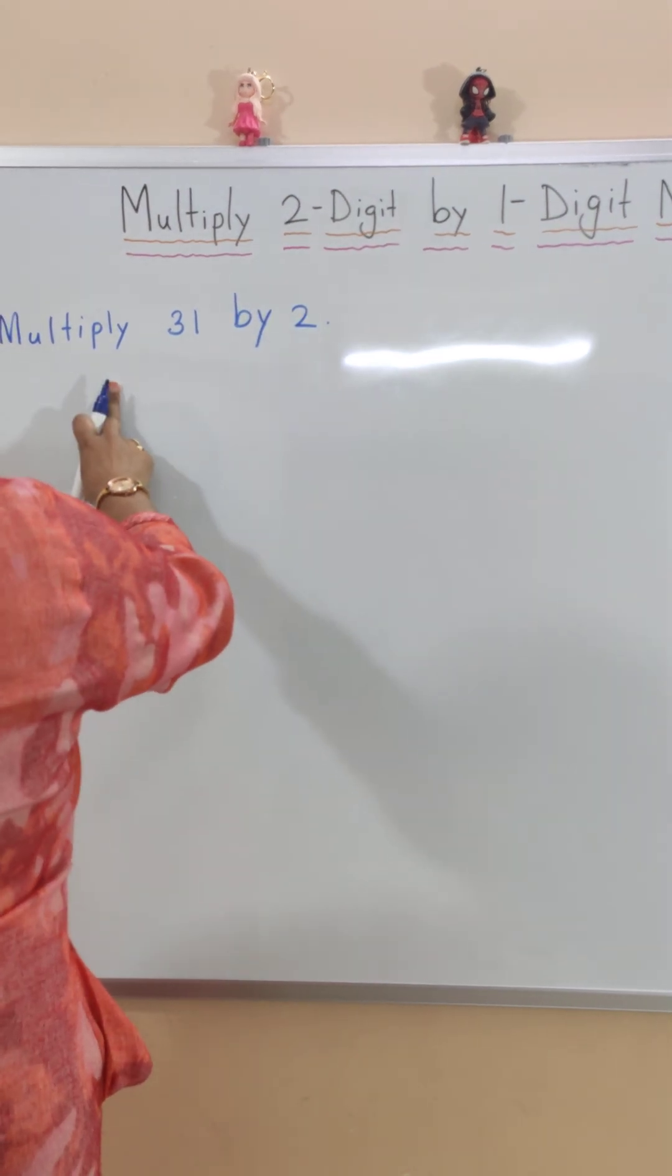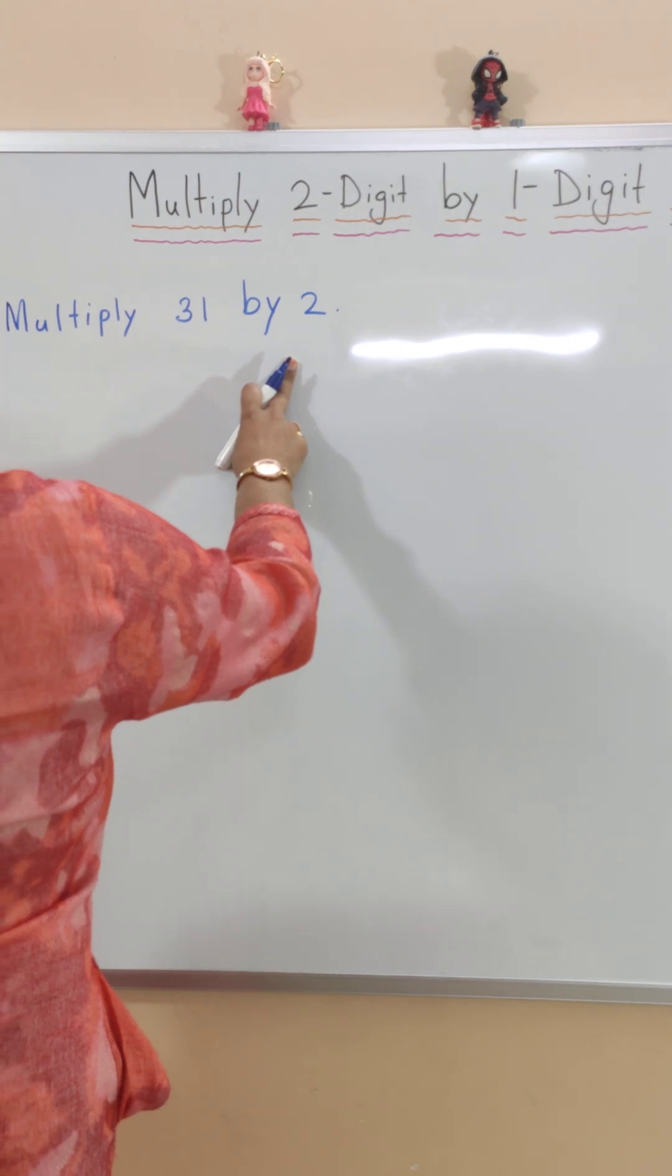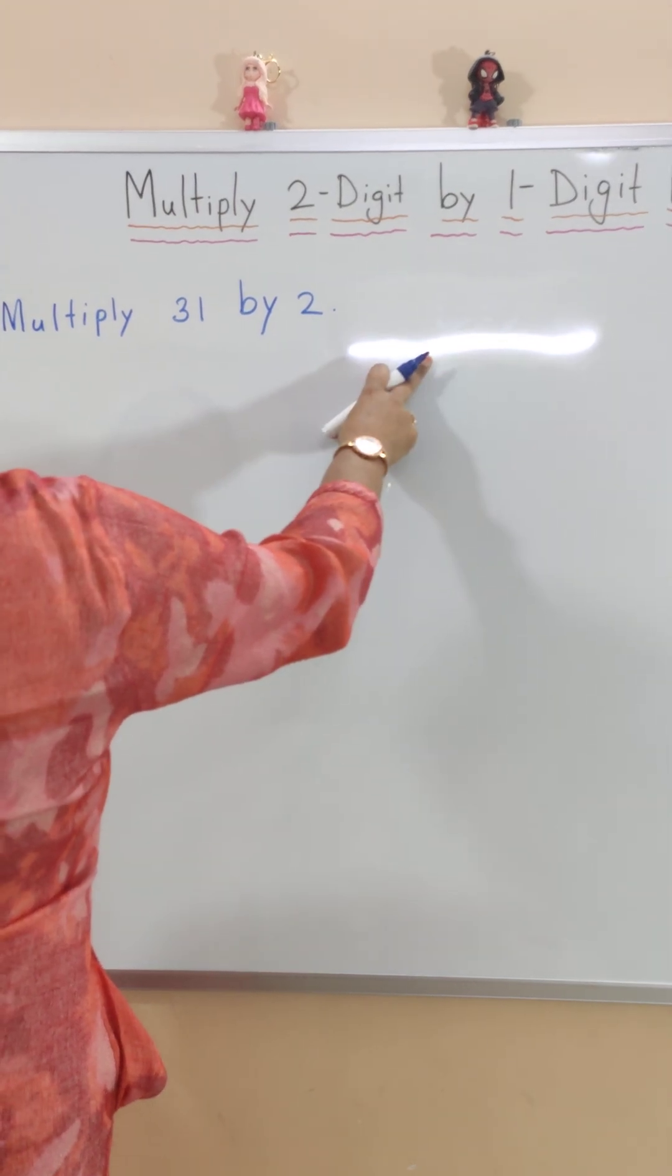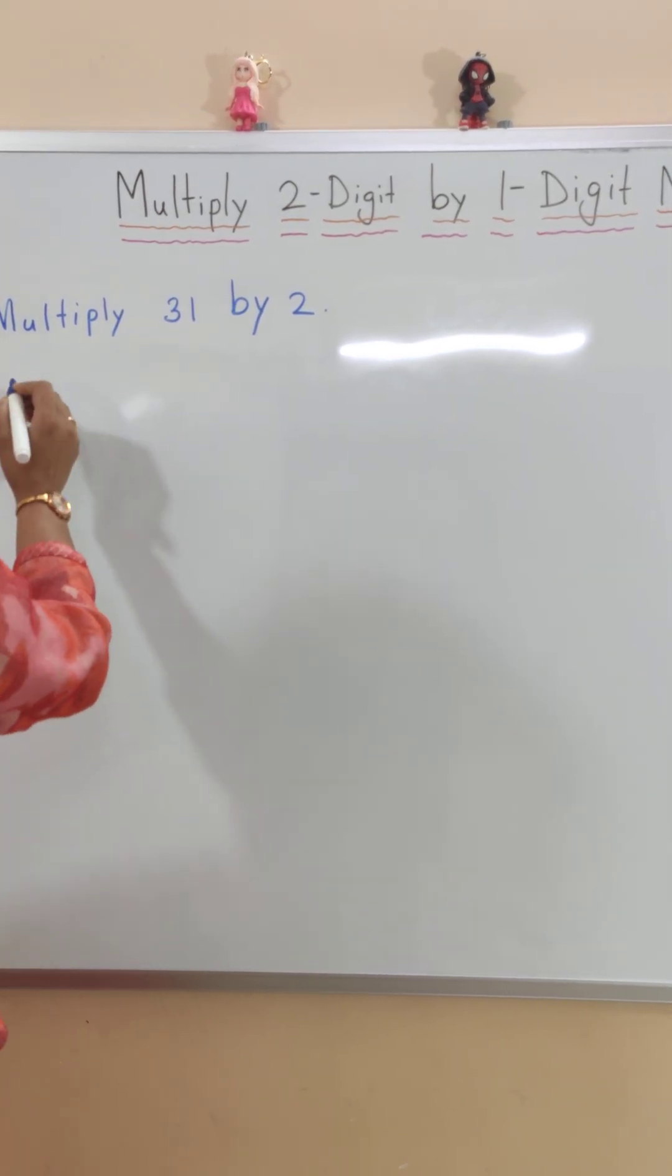I will show you two methods. One method using the expanded form of the multiplicand and the next method is the short method of multiplication. So let me show you the first method.